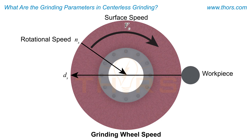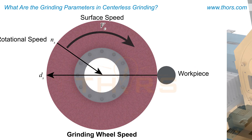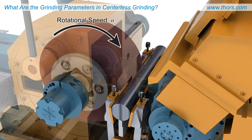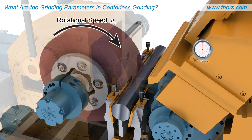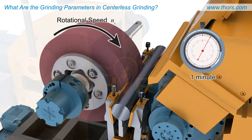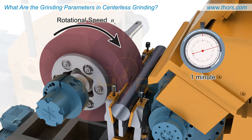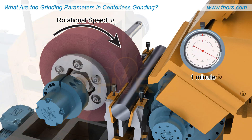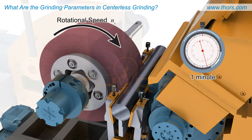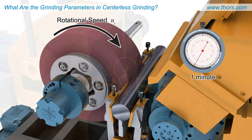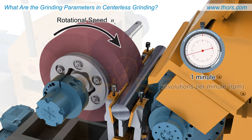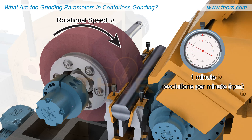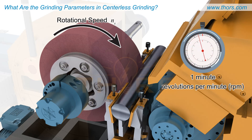or as surface speed, or VC. Rotational speed is the number of times the grinding wheel revolves on its spindle or axis in unit time, and is typically measured in revolutions per minute, or RPM.